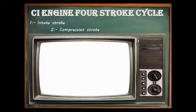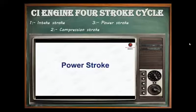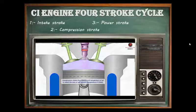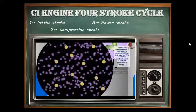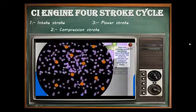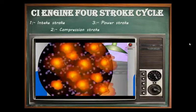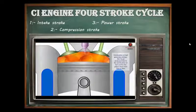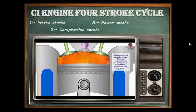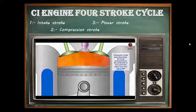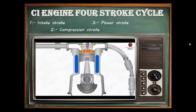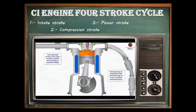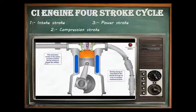The third stroke is the power stroke. At the end of the compression stroke, when the piston is at the top end of the cylinder, a metered quantity of diesel is injected into the cylinder by the injector. The heat of the compressed air ignites the diesel fuel and generates high pressure, which pushes the piston down. The connecting rod carries this force to the crankshaft, which turns to move the vehicle. At the end of the power stroke, the piston reaches the bottom dead center. As we can see in this video, the downward motion of the piston provides positive drive energy to rotate the wheel.